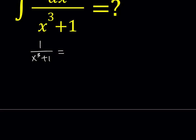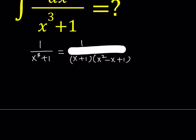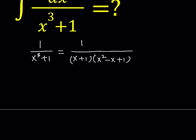First, let's go ahead and factor the denominator. Since it's a sum of two cubes, we can write it as x plus 1 multiplied by x squared minus x plus 1.